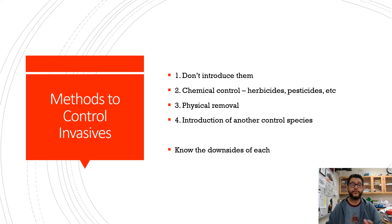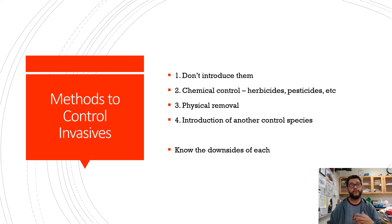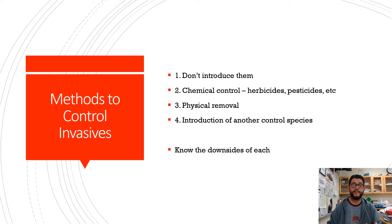Some methods to control invasive species: don't introduce them; you can use chemical controls if they're plants; physical removal; or introduce another control species. It's important to know the downsides of all of these — introducing species is difficult, chemical controls can harm non-target species, physical removal is tedious and expensive, and introducing a control species can be expensive as well.